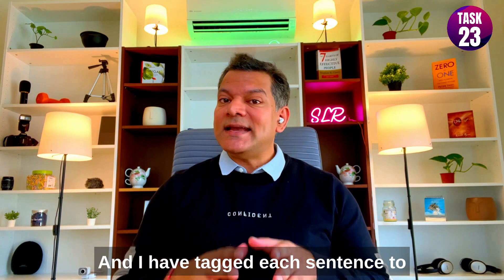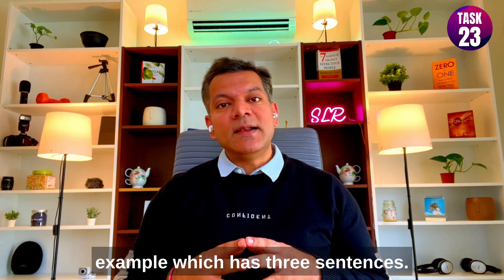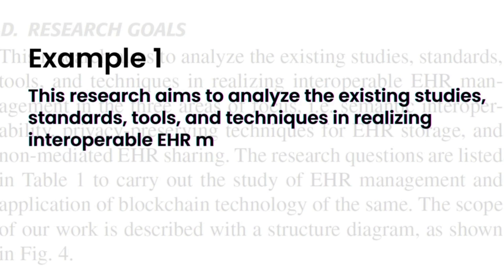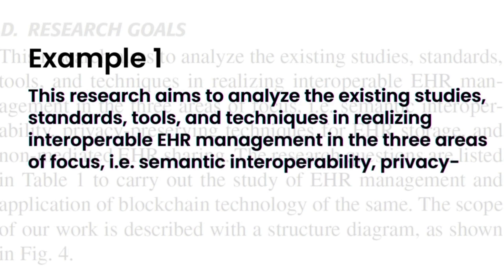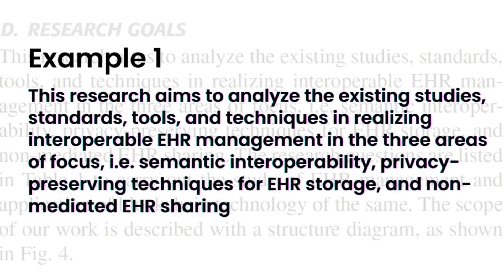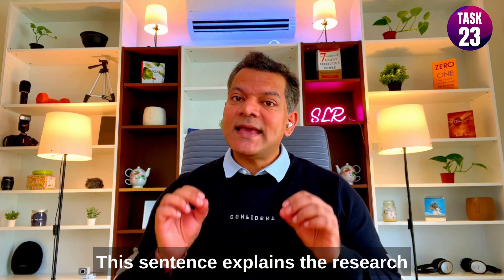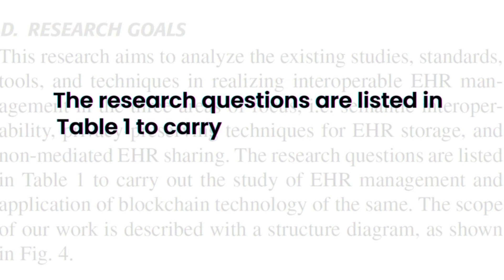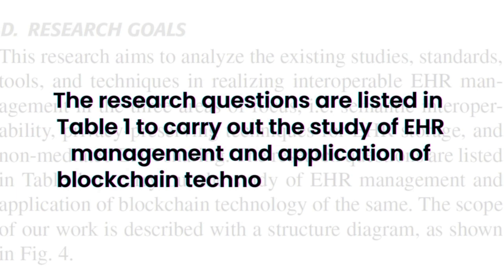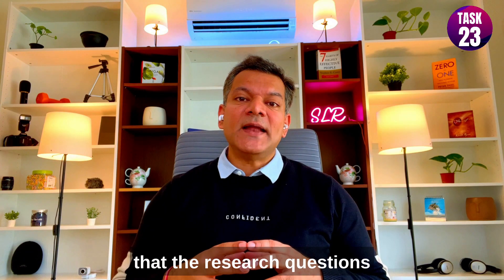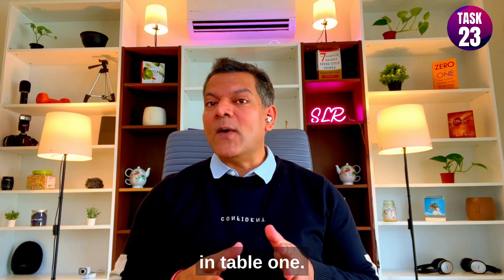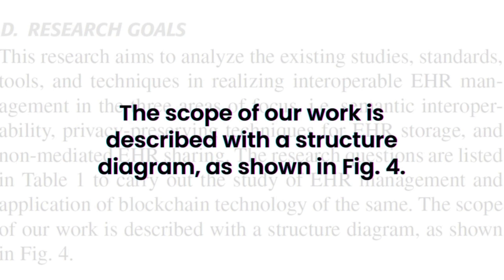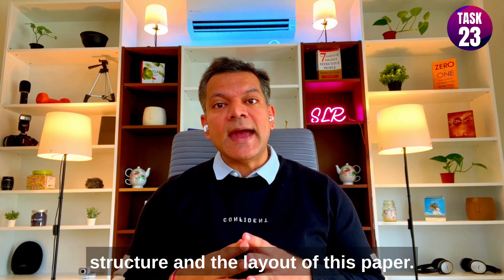Let's start with example one, which has three sentences. The first sentence is: 'This research aims to analyze the existing study standards, tools and techniques in realizing interoperable EHR management in the three areas of focus — that is, semantic interoperability, privacy-preserving techniques for EHR storage, and non-mediated EHR sharing.' This sentence explains the research aims and goals clearly. The second sentence says the research questions are listed in Table 1 to carry out the study. The third sentence tells the reader to refer to Figure 4 for understanding the structure and layout of the paper.